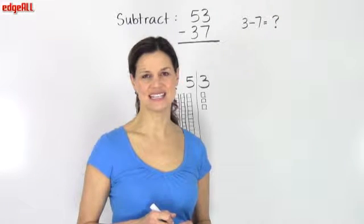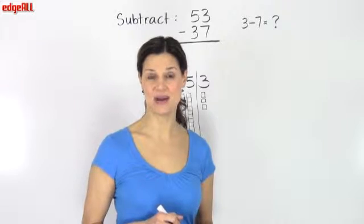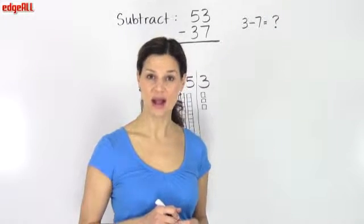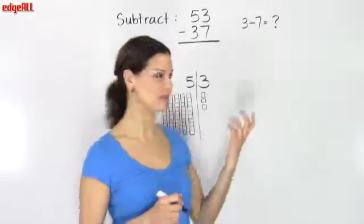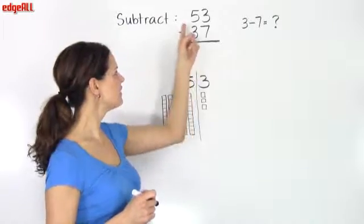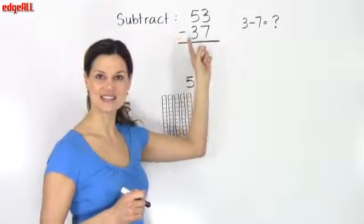As you have learned to subtract two-digit numbers by lining them up vertically, you have probably run into some problems like this. We've got the instruction to subtract 53 minus 37.